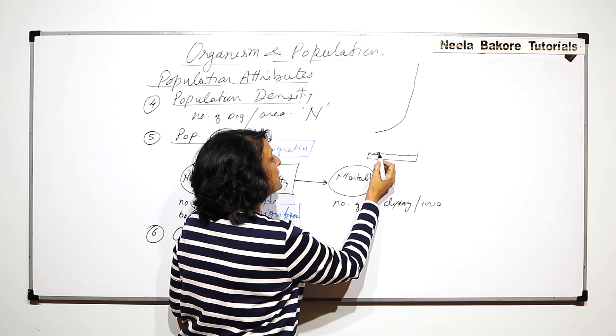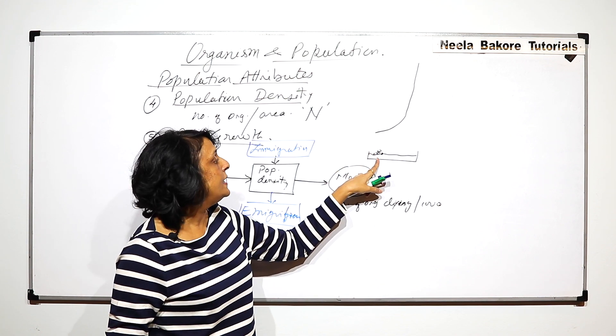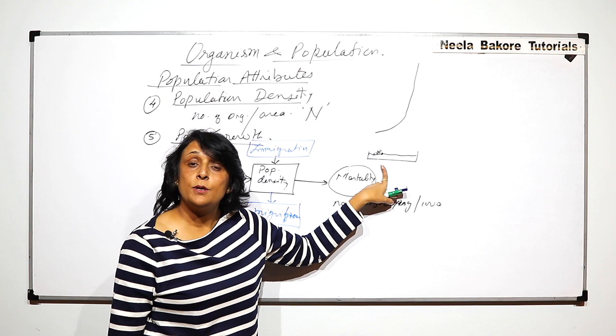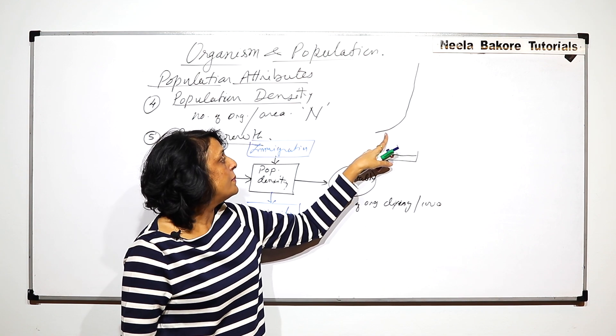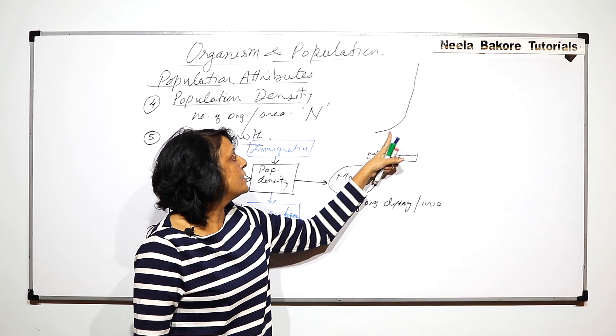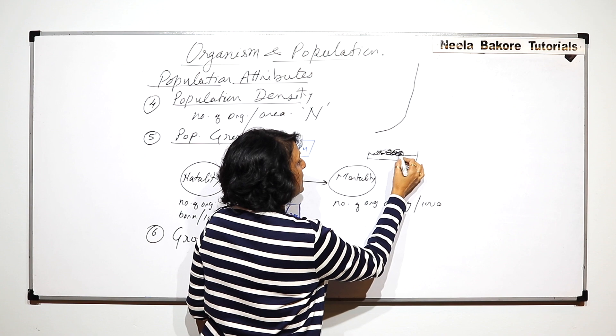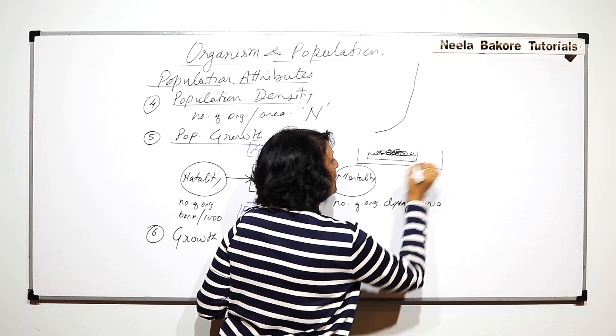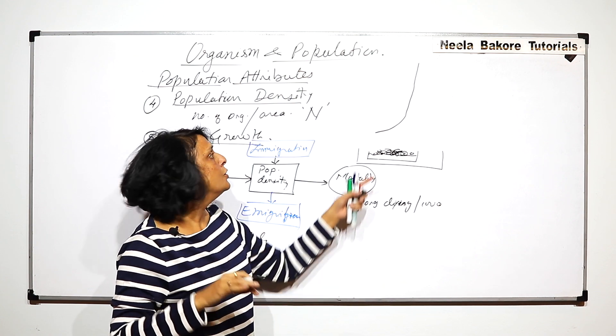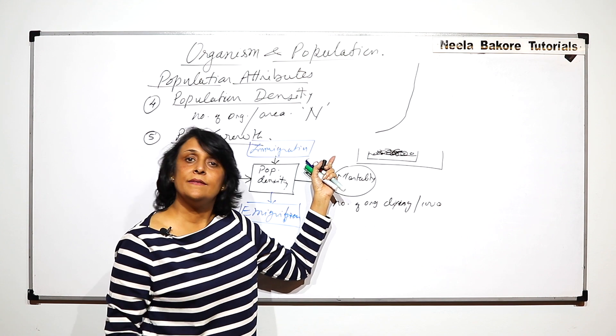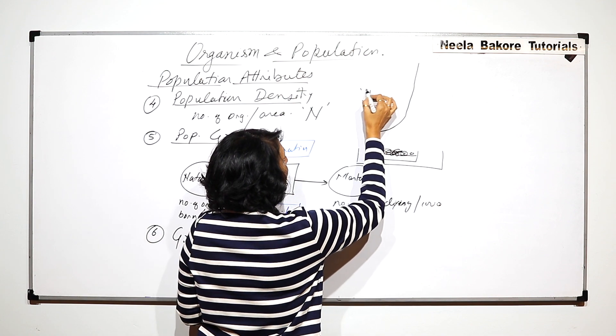These microbes are going to adapt to this condition. Once they get adapted, their number increases, meaning they start to reproduce. Initially it is slower, and then when they reproduce, the petri dish becomes smaller. You transfer them to a bigger one, meaning now you are providing them with more space, more nutrition, everything what they need. So there is nothing which is going to limit their growth, so the growth curve which we would get is a J-shaped growth curve.